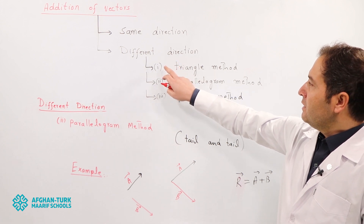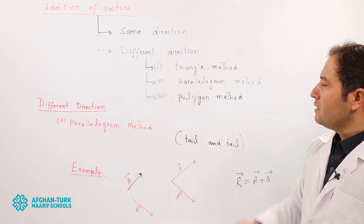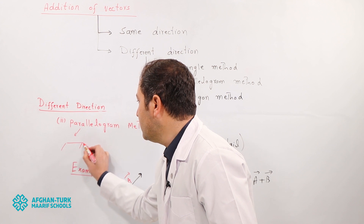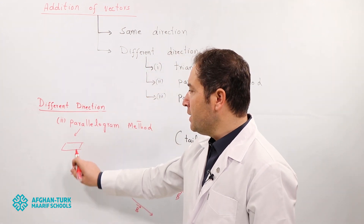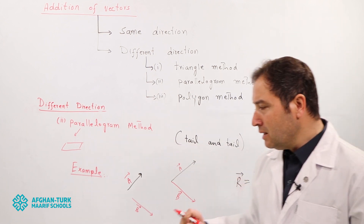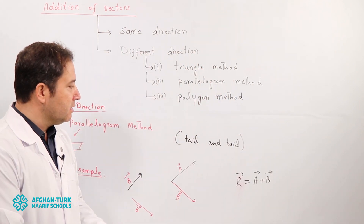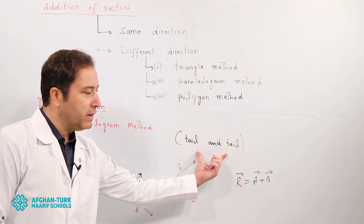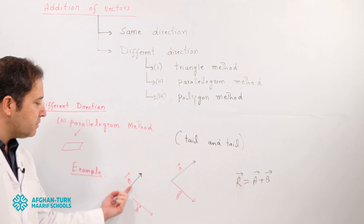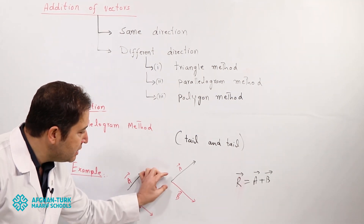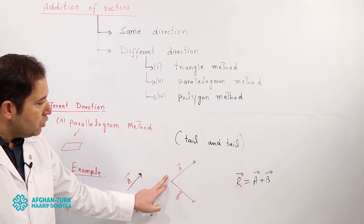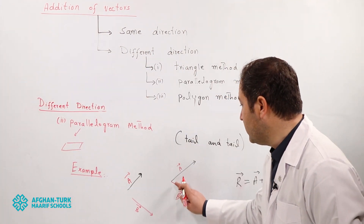In different direction we also have the parallelogram method. A parallelogram means the opposite sides are parallel to each other. The parallelogram method is also called the tail-to-tail method. In this method, we combine the tails of both vectors — vector A and vector B — joining them tail to tail.